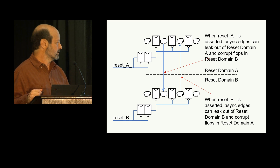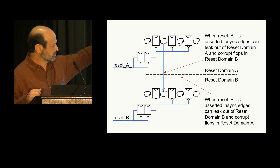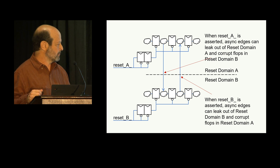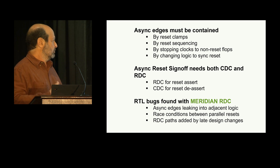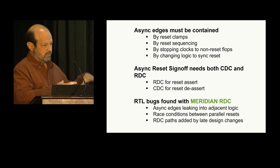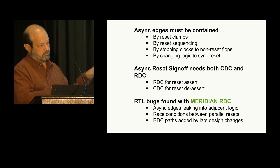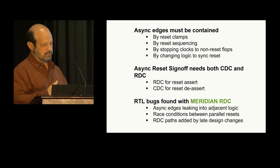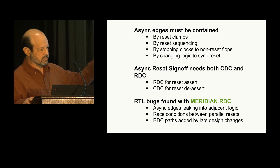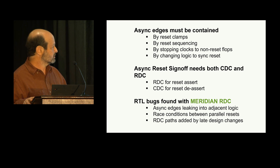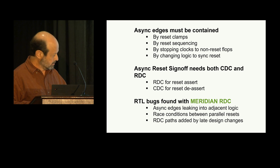The picture is showing two blocks and how resets could leak from one to the other if you're only resetting one at a time. There are many ways to try to stop this, but no matter how much we do, we still need to trust but verify. We try to make a dependable, trustworthy, correct-by-construction design, but then verify it. That's why we use RDC flows.